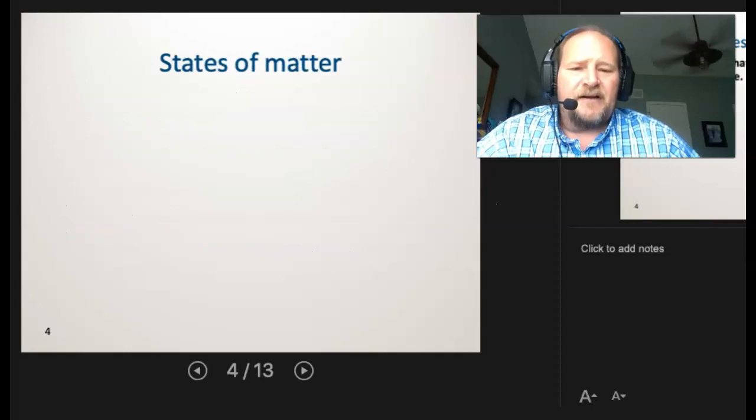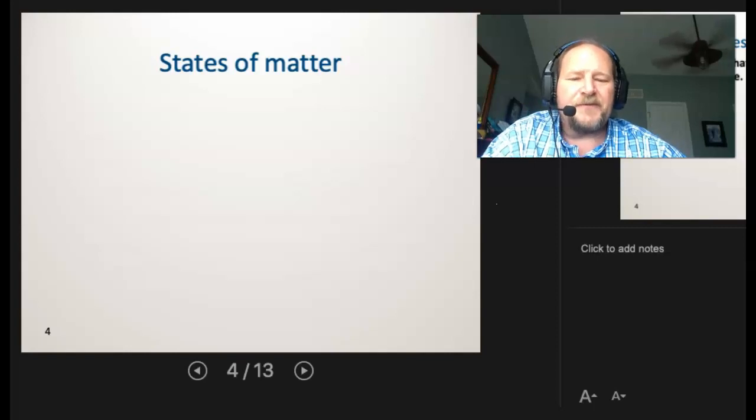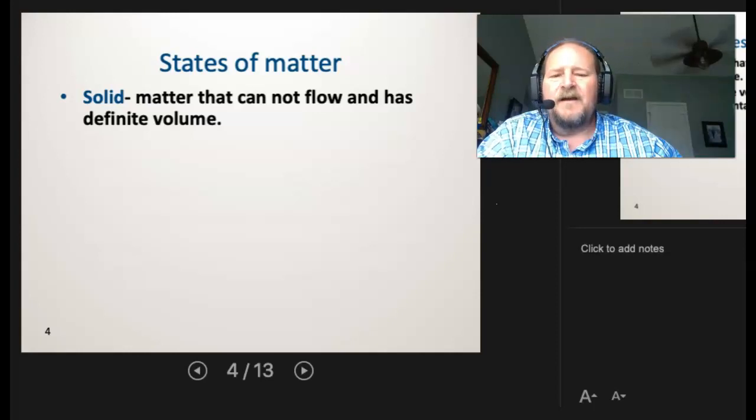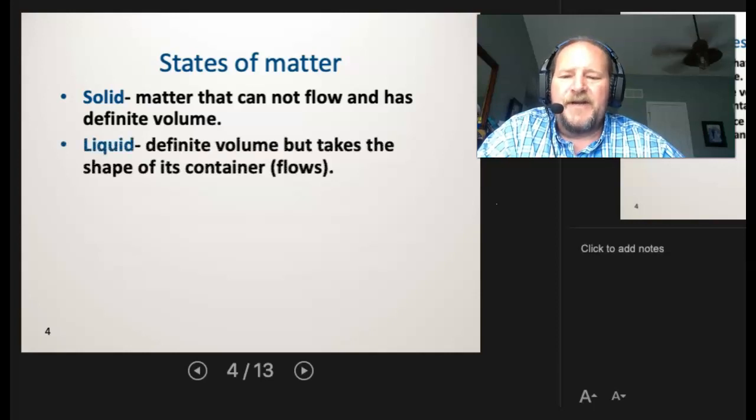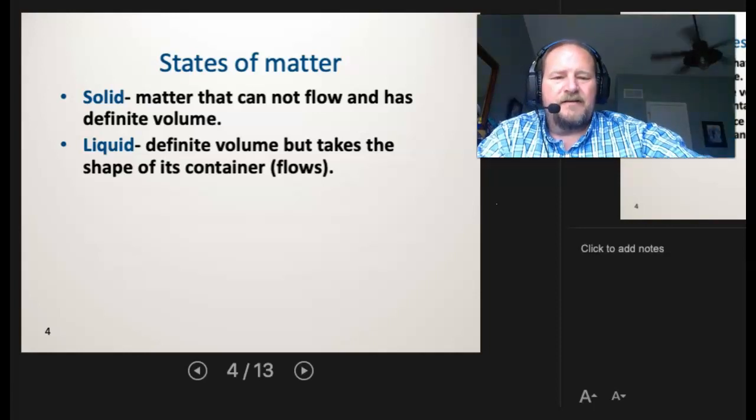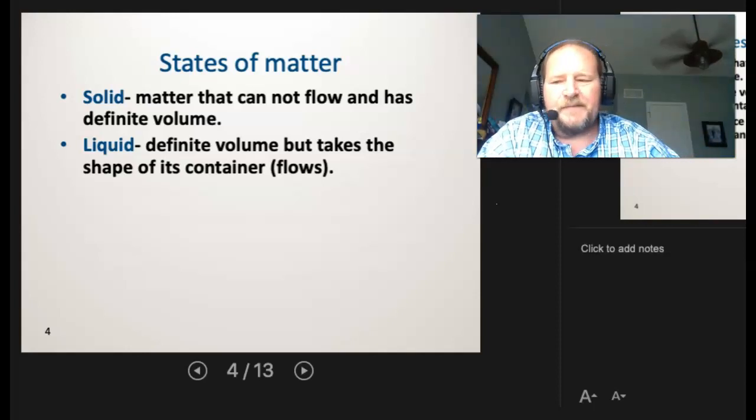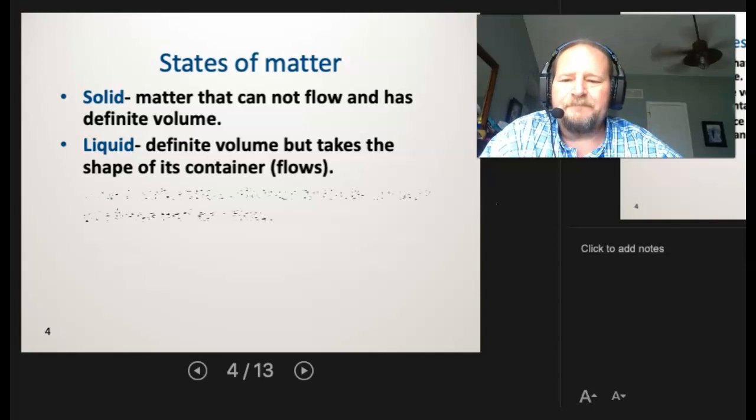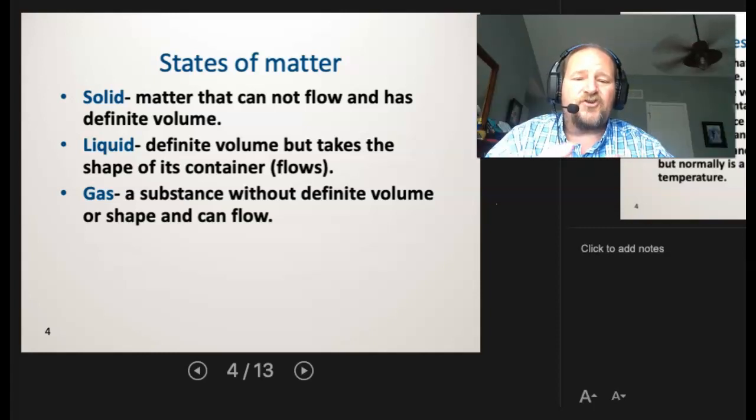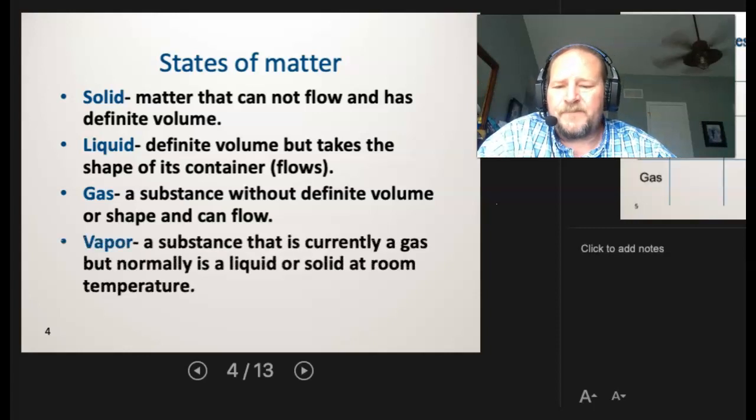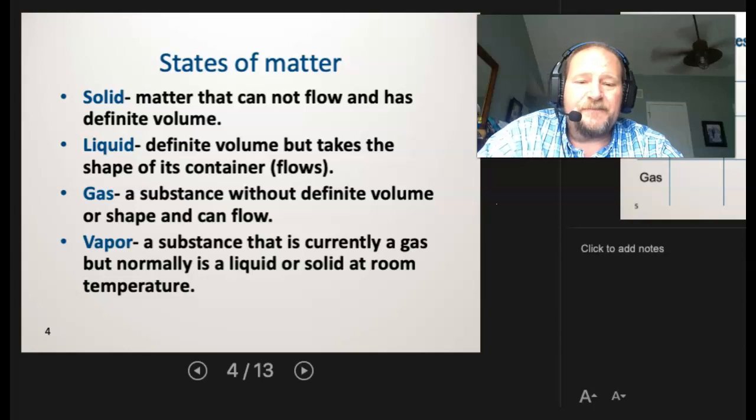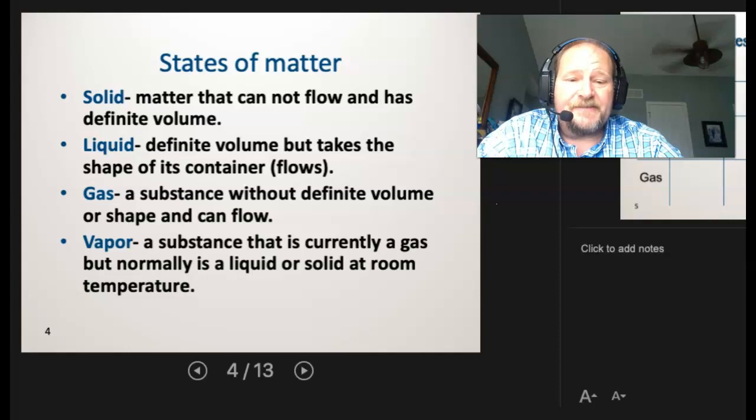So states of matter. I pointed out that the pen is a solid. Well, that's one of our states of matter. So we have three states of matter. We have solids, which is matter that cannot flow. My pen's not flowing anywhere and it has a set volume. A liquid has a definite volume, but it takes the shape of its container. So if you've got a cup of water, then the water has a set volume, but if I take it out of that cup and pour it into a different cup, it can change its shape to fill that container. Now gases are substances without a definite volume or a definite shape. So gases will expand or contract to fill the space they're in. Now vapors can sometimes be mistaken as a state of matter. Vapors are really gases, but they're liquids at room temperature. So they've converted to gas.